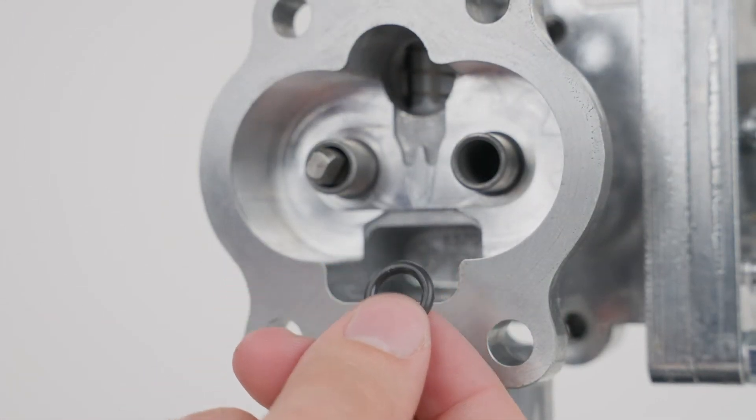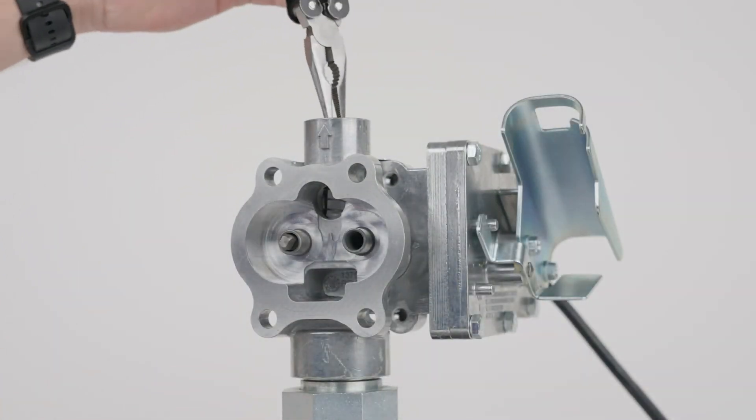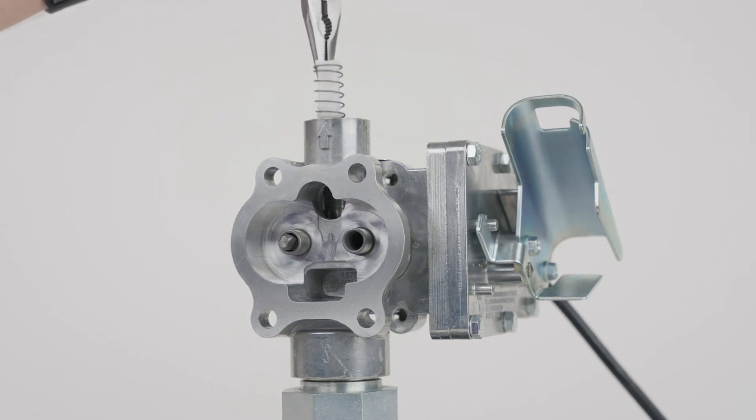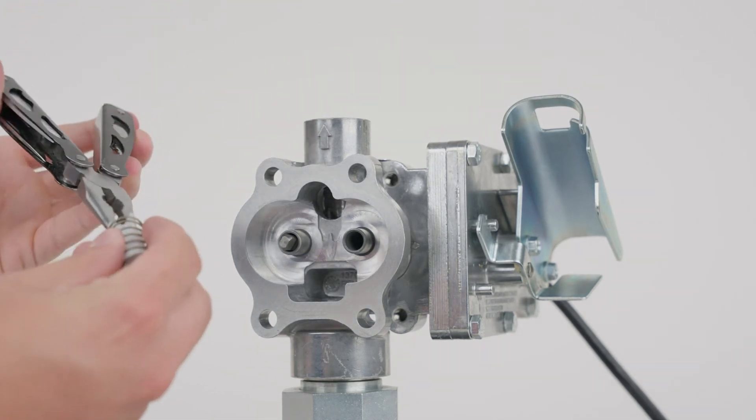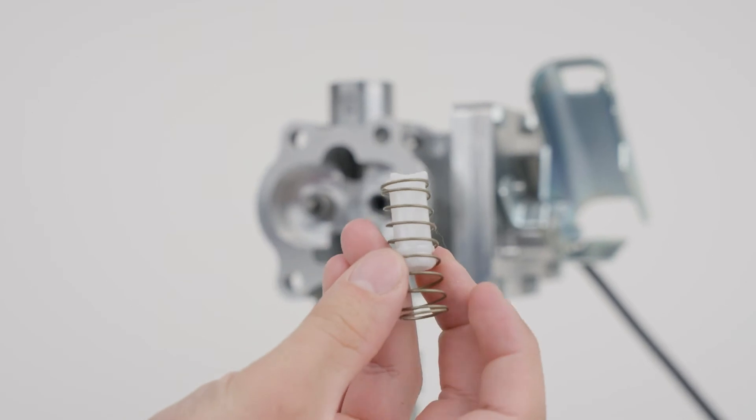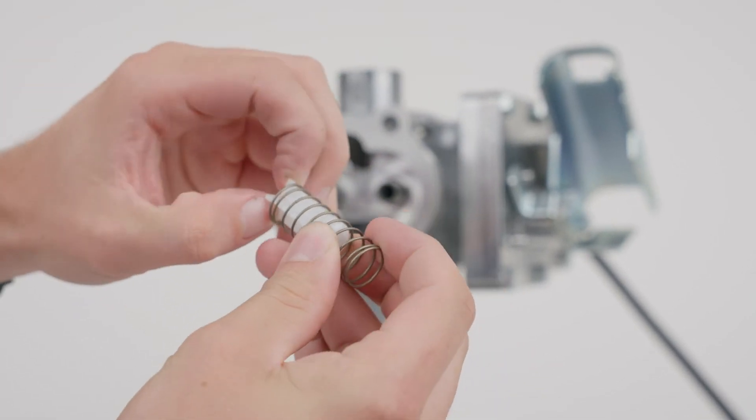Using a pair of needle-nose pliers, extract the poppet and spring from the bypass cavity and inspect for wear, debris, or damage.